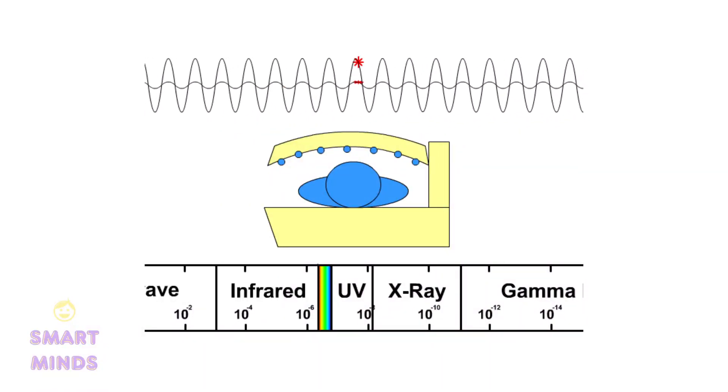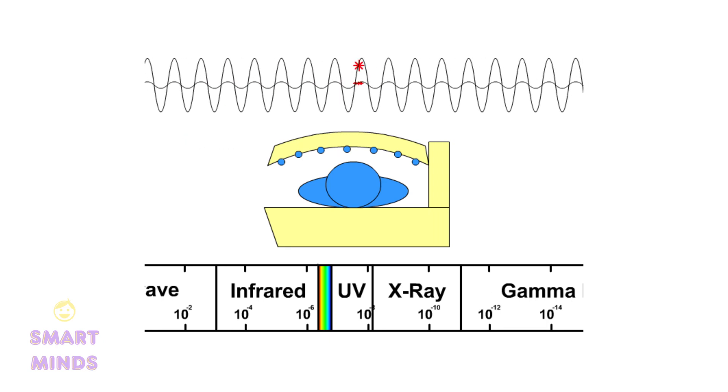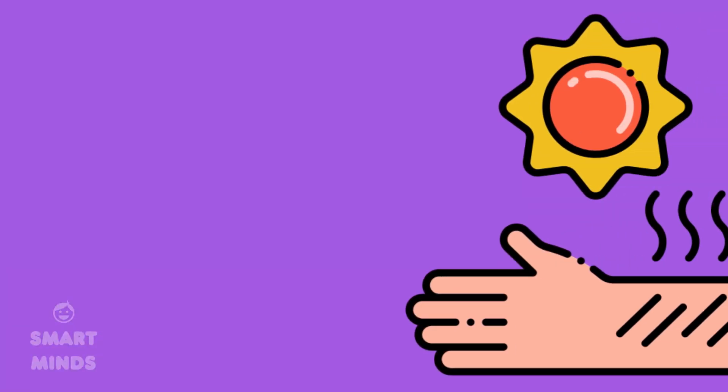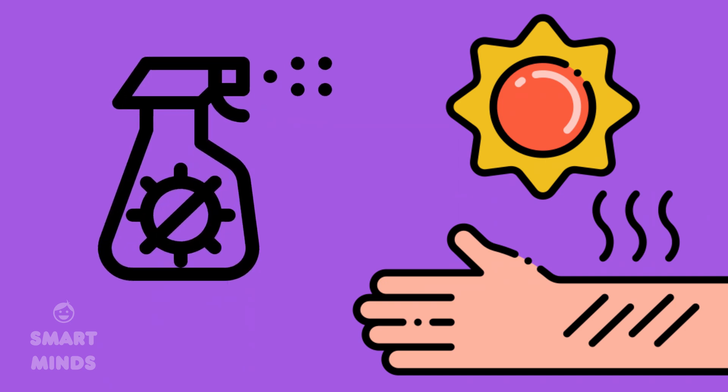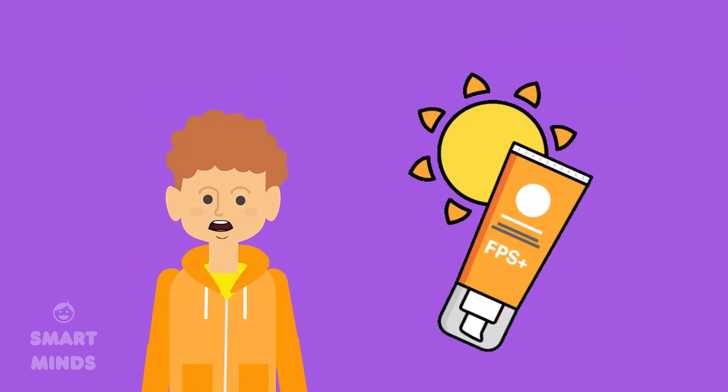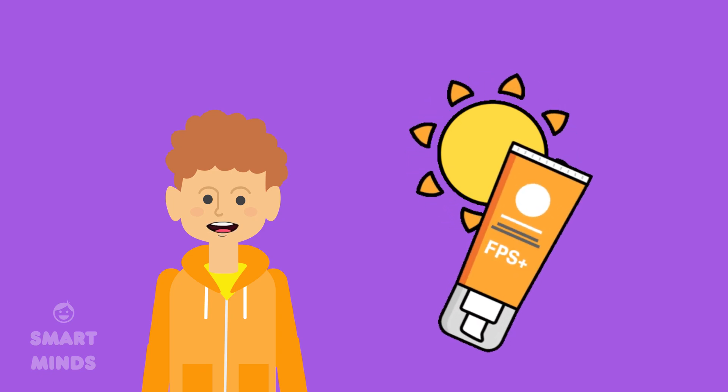Ultraviolet (UV) radiation has a higher frequency and shorter wavelength than visible light. It can cause sunburn and skin damage, but is also used in tanning beds and for disinfection. Remember to be careful of harmful sun rays and protect your skin by wearing sunscreen.